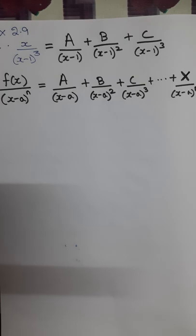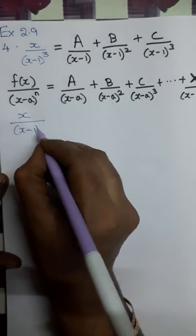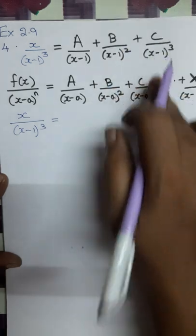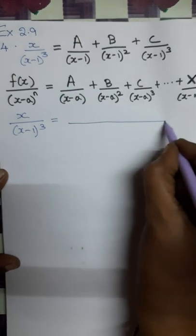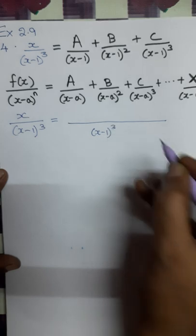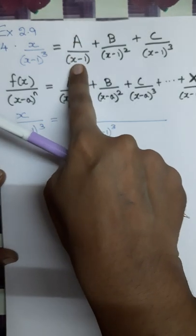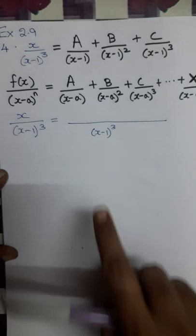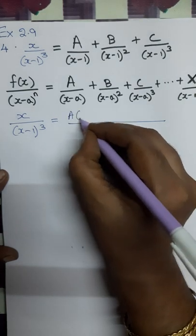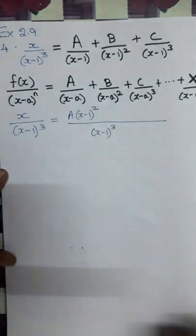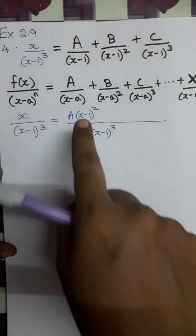We need to find the values of A, B, and C. Let me write the step again: x by (x minus 1) whole cube equals those 3 terms. Now I take the LCM of the 3 terms. The LCM of the denominator is (x minus 1) whole cube. The first term has (x minus 1), but the LCM is (x minus 1) cube, so A must be multiplied by (x minus 1) whole square.